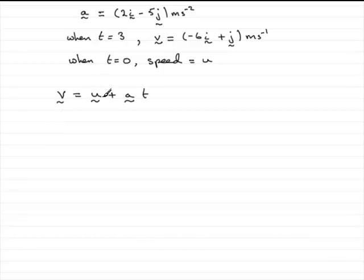So in order to get u, if I rearrange this, the vector u will be v minus at, and then all I've got to do is put in these values. v being minus 6i plus j, and then we've got minus the acceleration times t, which is 3. So I'm going to put the 3 at the front of the bracket for acceleration, 3 lots of 2i minus 5j.